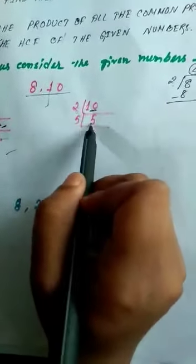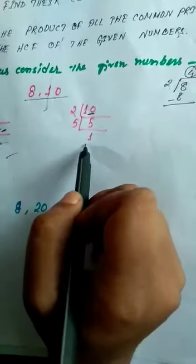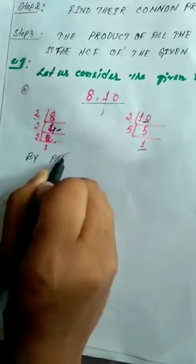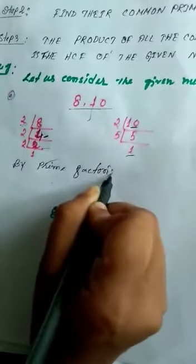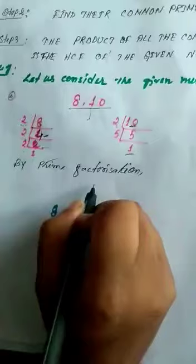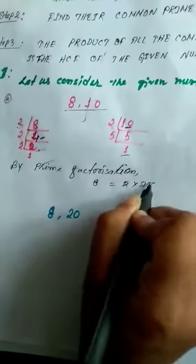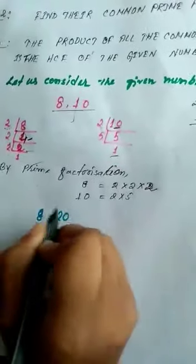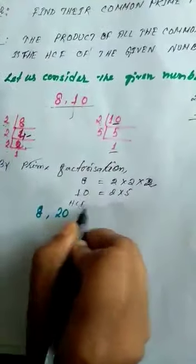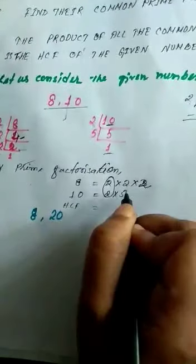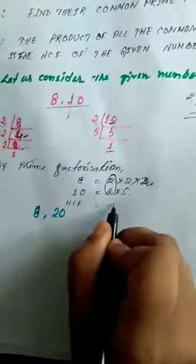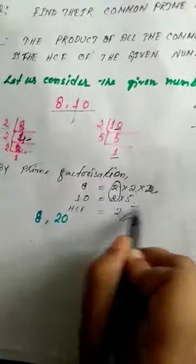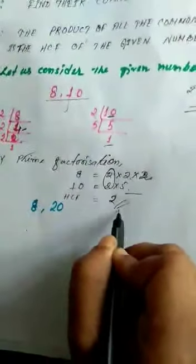By prime factorization, 8 = 2 × 2 × 2 and 10 = 2 × 5. The HCF will be the common factor. Here 2 is common, but the rest are not. So the HCF is 2. Since only one 2 is common, there is no need to find a product — the HCF of 8 and 10 is simply 2.